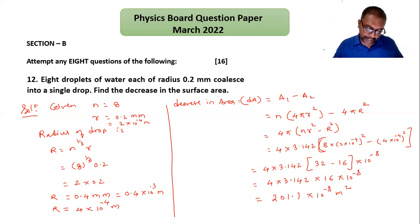This is the decrease in area, or you can write it like 2.011 times 10 raised to minus 6 meters squared. This is the decrease in area. So here we finish this problem.